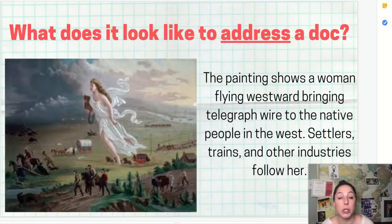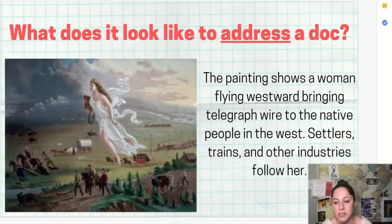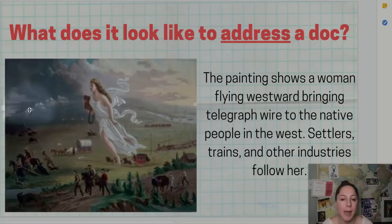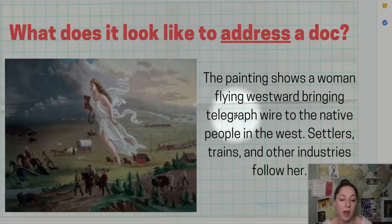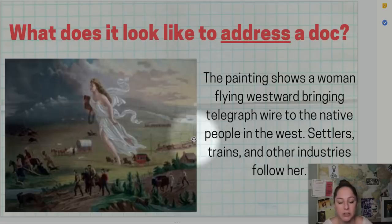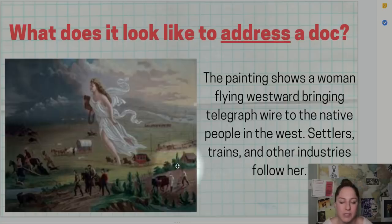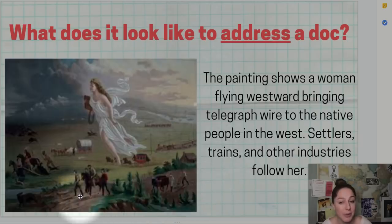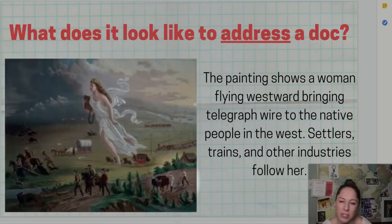What does it mean to address a document versus use a document? To address a document basically just means describing it in your own words. For example, with a famous painting about manifest destiny, a student addressing the document might say 'this painting shows a woman flying westward, bringing telegraph wire to the native people in the West, while settlers, trains, and other industries follow her.' That shows you understand the painting, but you haven't given us anything a random person couldn't get from just looking at it — it's only a surface-level understanding.